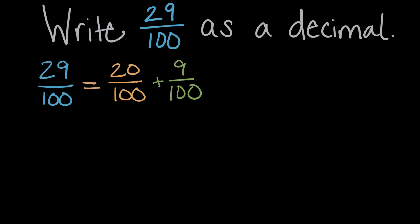Going from there, we can simplify even more. 20 hundredths can be simplified. We could divide 20 and 100 by 10. So we'll say two tenths plus nine hundredths. And now, if you can hear the tenths, hundredths, these are place values we should recognize from decimals.